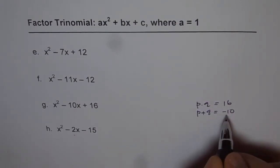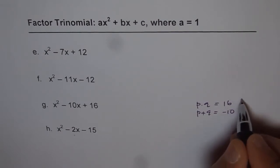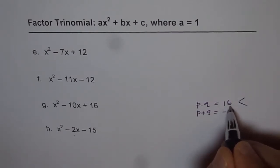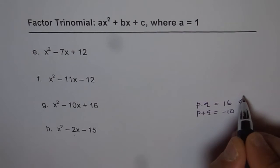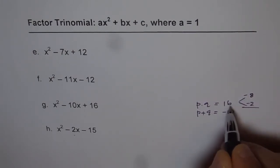So when we want sum as minus 10 and product as positive, then both the numbers should have same sign and both negative. So both negative giving us 16 when multiplied is 8 times 2. So minus 8 minus 2, when you multiply you get plus 16, and when you add, you get minus 10.